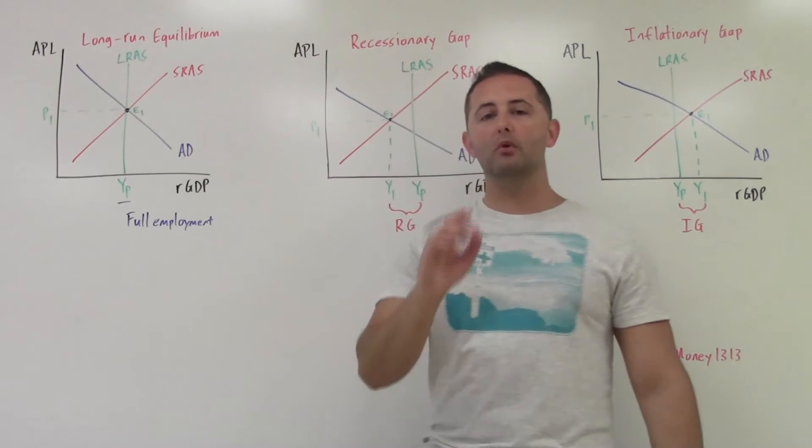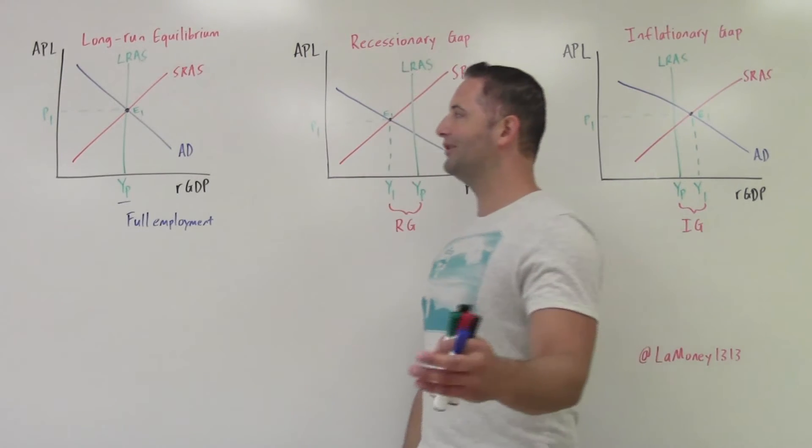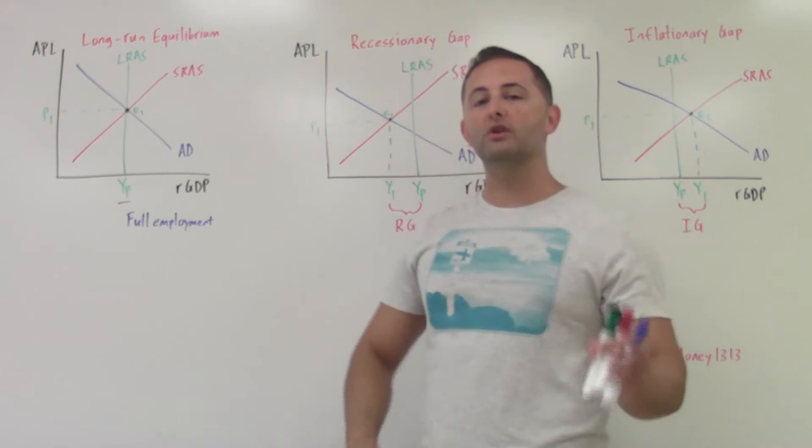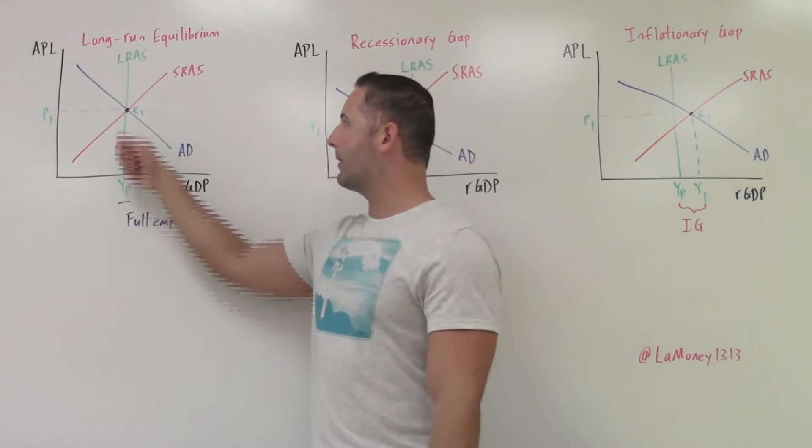So when we are here, if you remember, what kind of unemployment is missing from that? And hopefully you got that. It's cyclical. There is no cyclical unemployment when we are on the long-run curve.